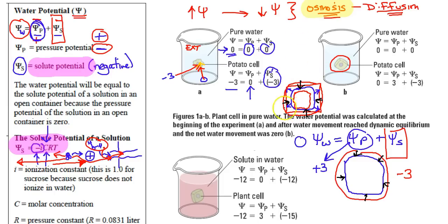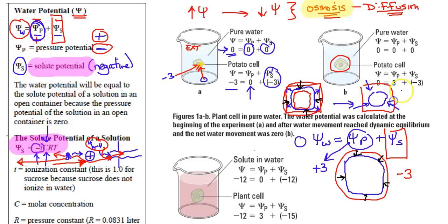A turgid cell means water is filling it up past its max, pushing back on the cell wall and creating a very stiff cell filled with water, giving the plant structure — that's how plants stand up. When plants wilt, they don't have this turgor pressure anymore. They're flaccid, with the cell membrane pulling away from the cell wall, leaving loose air pockets — that's the wilted form.